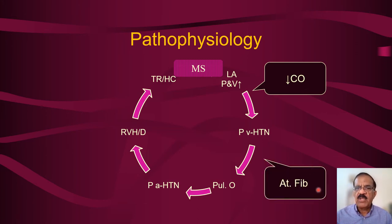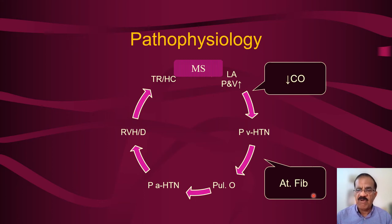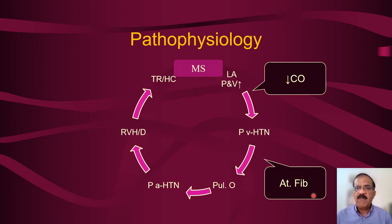The most dreadful complication of mitral valve disease is atrial fibrillation. Whatever condition makes the sinus node unstable promotes atrial fibrillation. In patients with mitral stenosis, because the atria are dilated and the atrial muscle is stretched, the sinus node becomes unstable. Atrial fibrillation can be clinically recognized by an irregularly irregular fast pulse rate. It not only has additional complications but makes the hemodynamics very much worse.